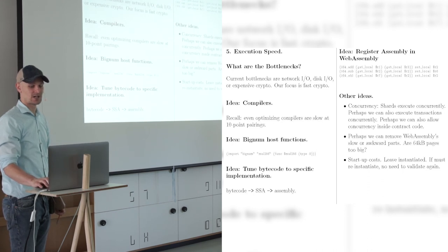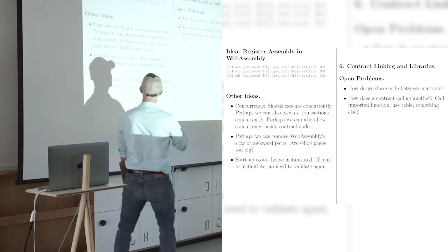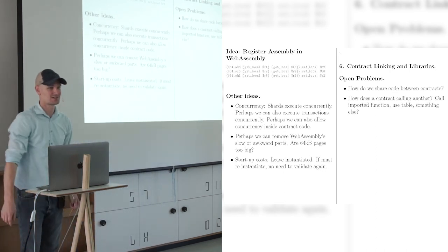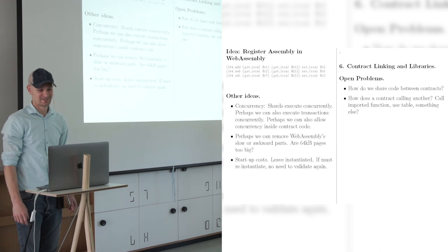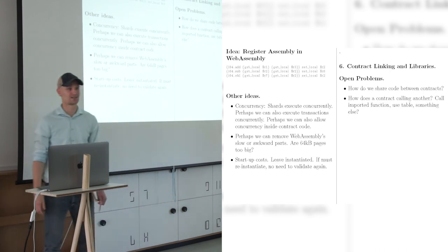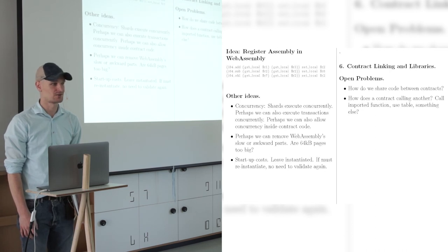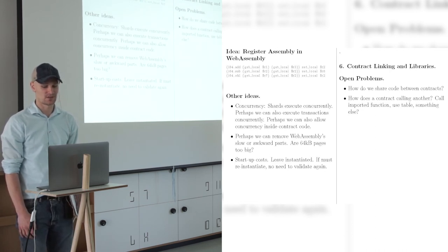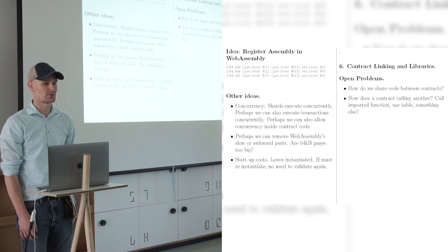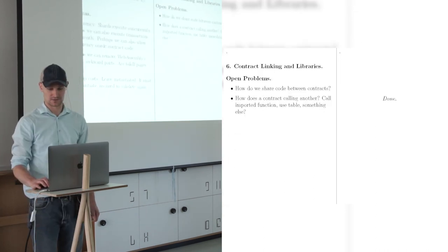Yeah. So I'm gonna, I'm wrapping up. Yeah. So that's it, actually. Concurrency. Do we need 64 kilobyte pages? Where is that? Yeah. Are 64 kilobyte pages too big? I think so. Startup costs. We can leave things instantiated. We don't have to revalidate if we validated the first time. Things like that. So the linking things is wide open still. Do we use imports? Do we use tables? We want to share code. We don't want to reproduce code. So these are all open and open for prototyping. So that is it.